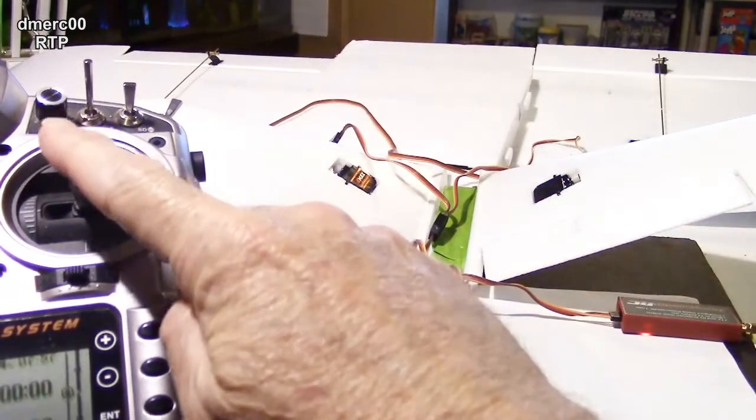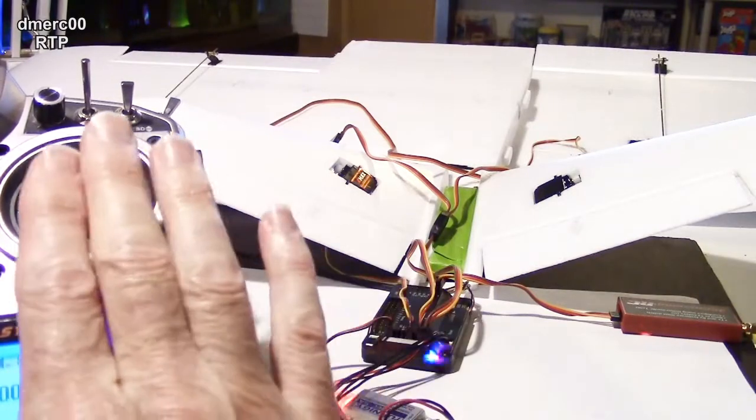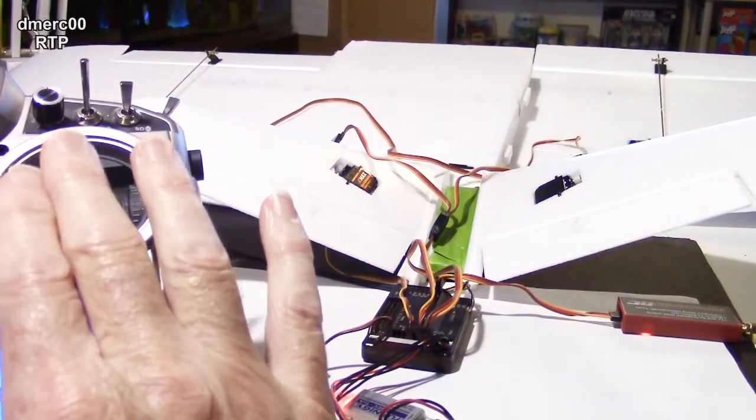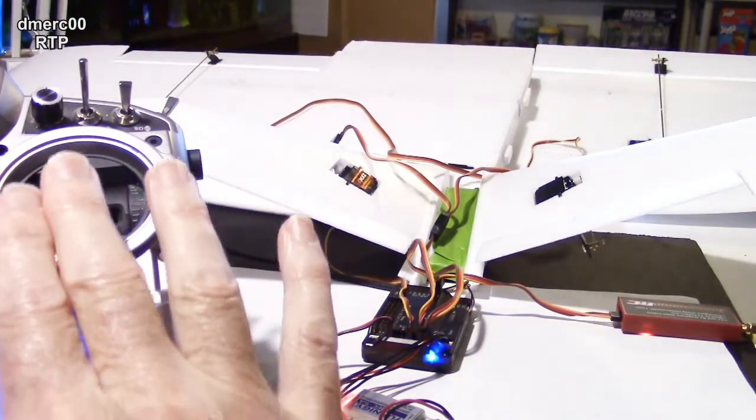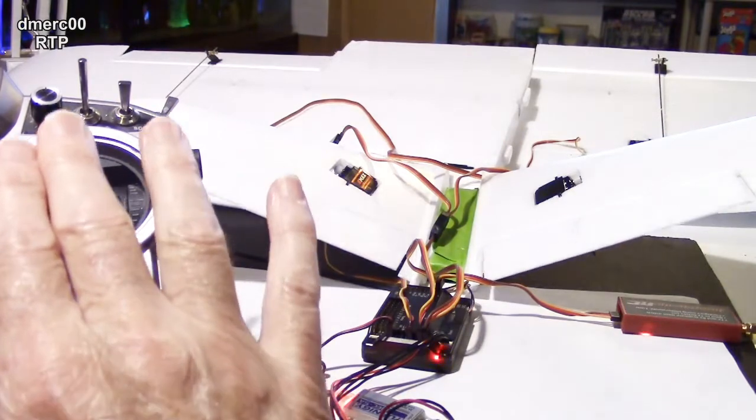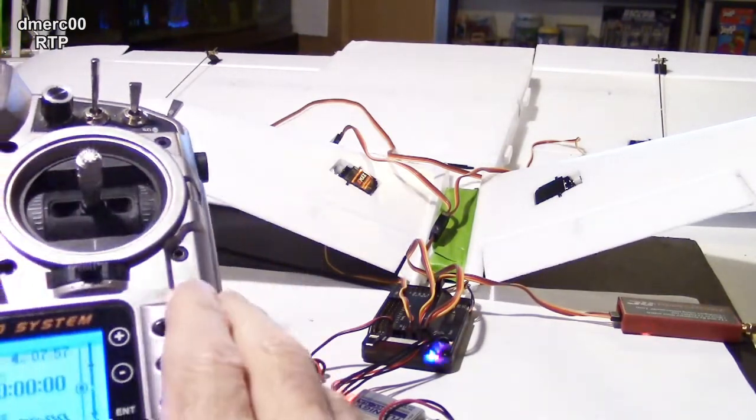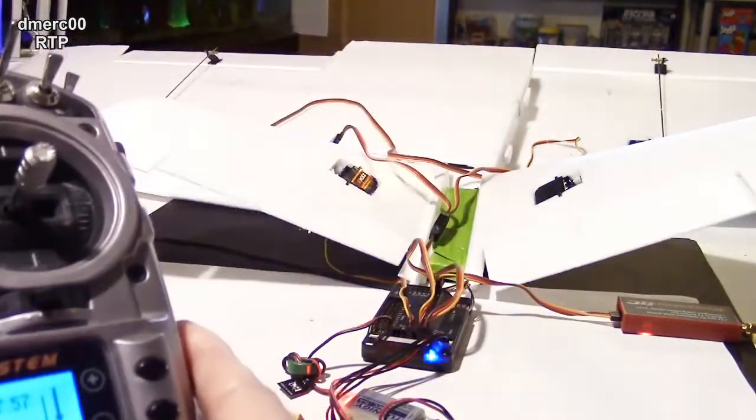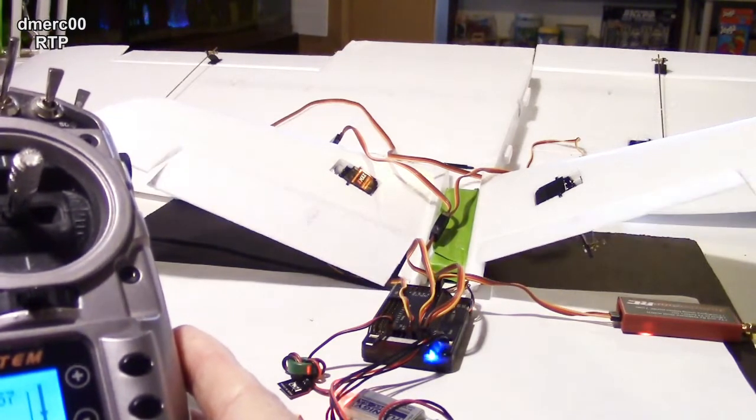So right now if I move the ailerons, you can see them moving opposite directions right here like that. And if I go this way, nothing happens with the ailerons, but you can see the V-tail moving up and down to control the pitch of the plane. And if I move the rudder stick over here, you can see the V-tail reacting as a rudder.